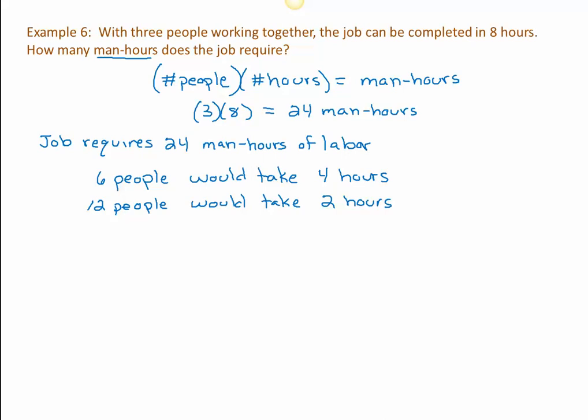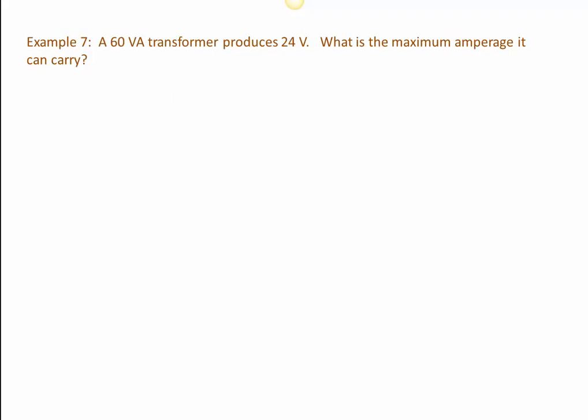Alright, last one. A 60 volt amp transformer produces 24 volts. What is the maximum amperage it can carry? So we have volt amps here, and this is a hyphenated unit, we just don't see the hyphen. So volt amps is equal, of course, to the number of volts multiplied by the number of amps. Okay, so what do we have? We have 60 volt amps. Fill that in where it belongs. We have 24 volts, and we are missing the number of amps. Oh, look at that lovely equation. Pause the recording here, solve this yourself, find me a value for A, and then come back to the recording.